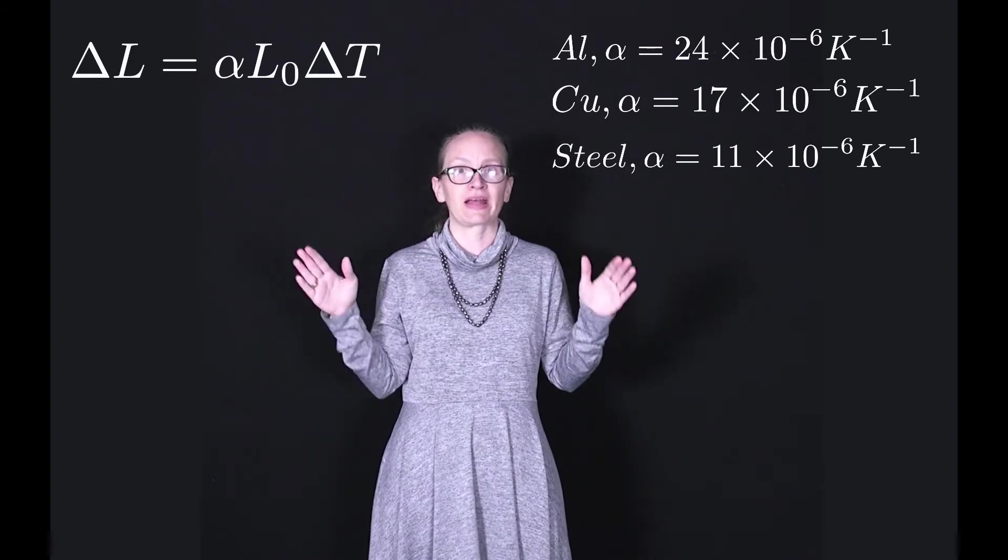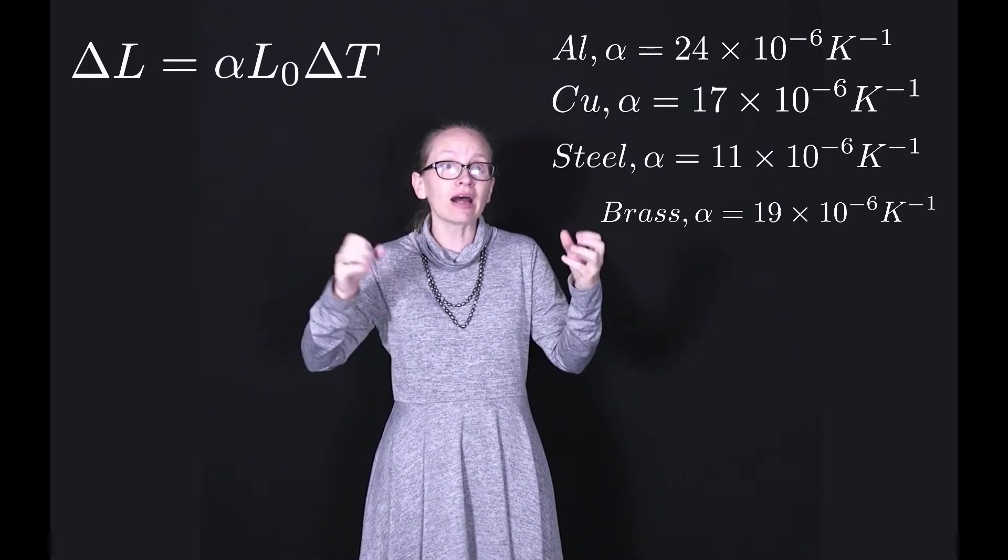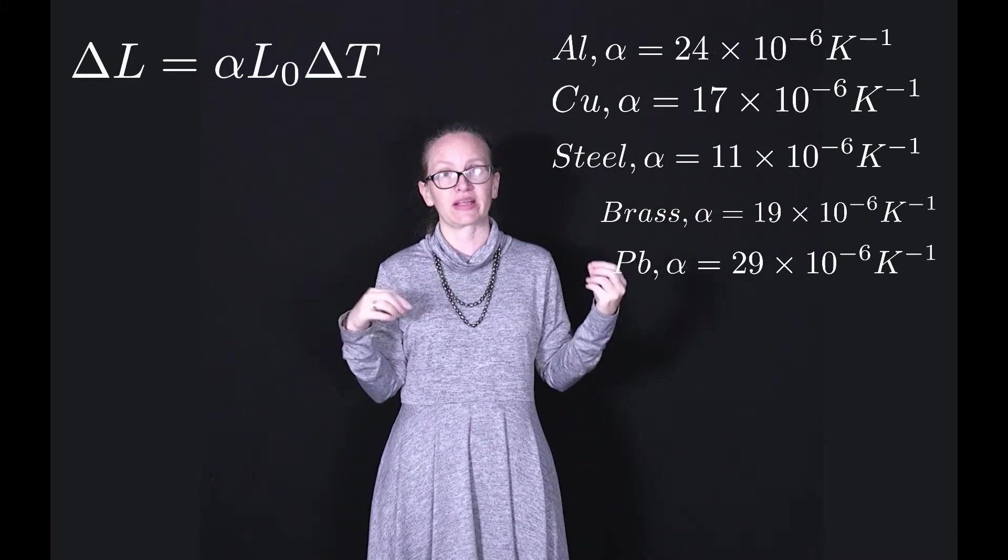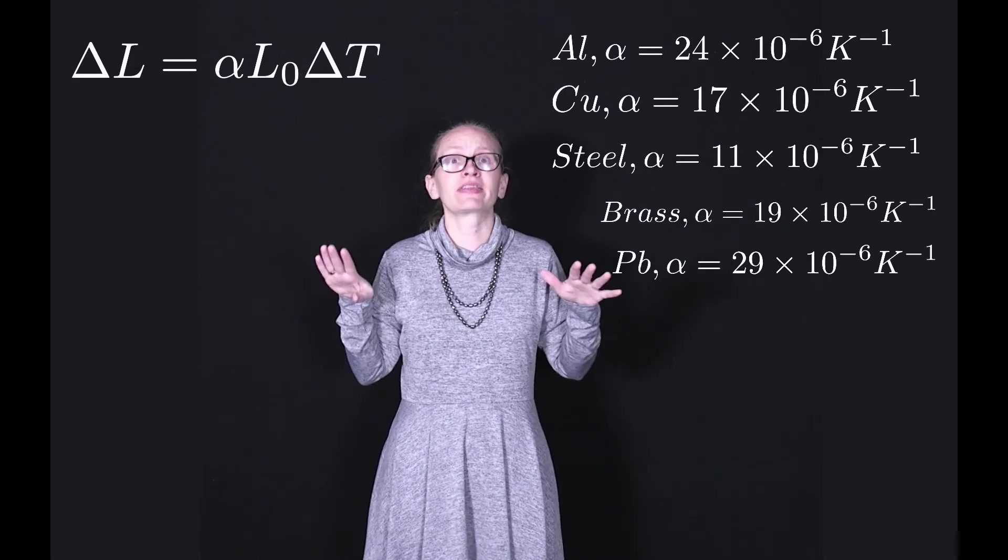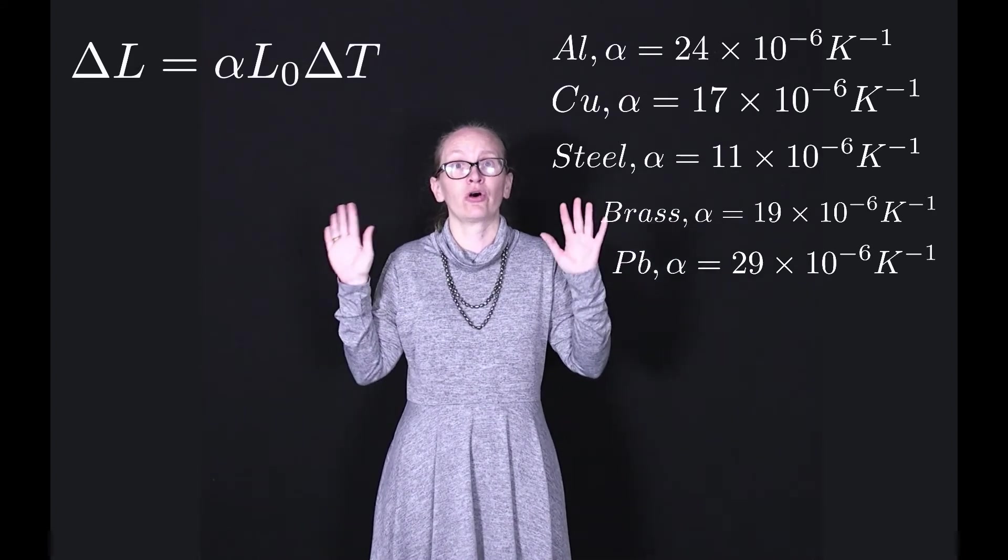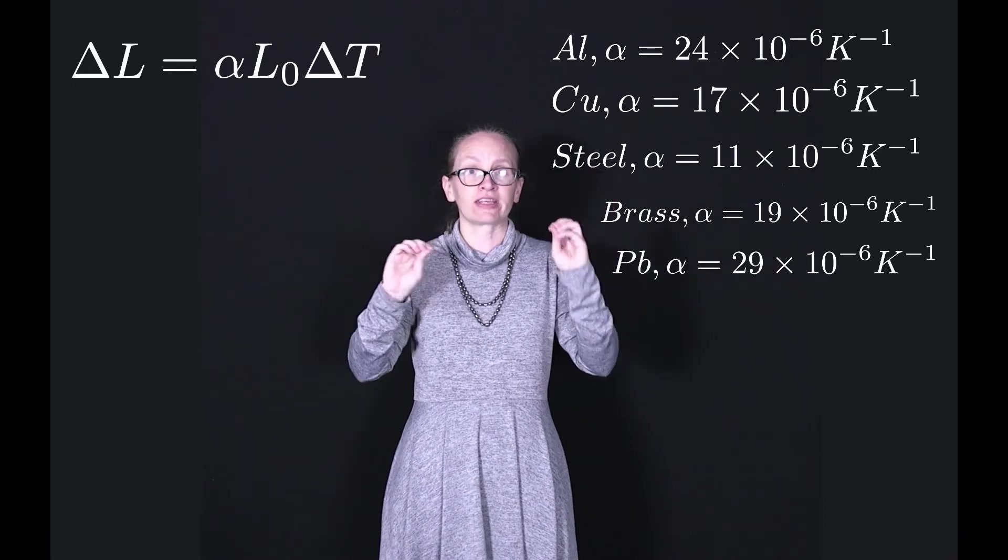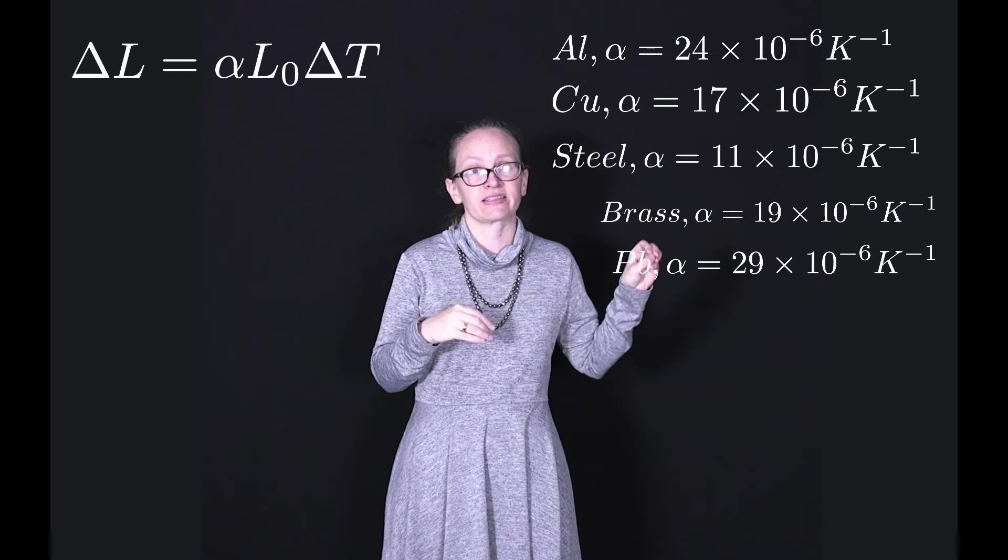Of course it depends on the exact type of steel. Brass is 19 × 10⁻⁶ per degree C, and lead is 29 × 10⁻⁶. These will all be given on your data sheet, and in any of the quizzes for this course, you should use the values given on that data sheet.